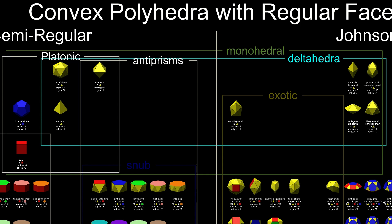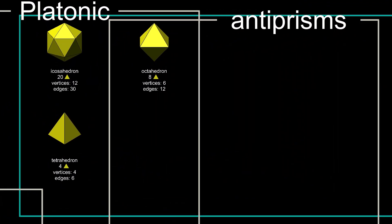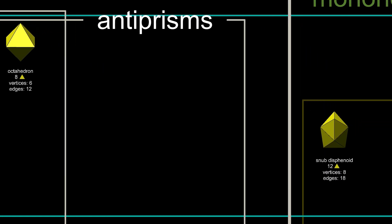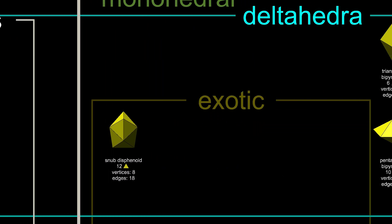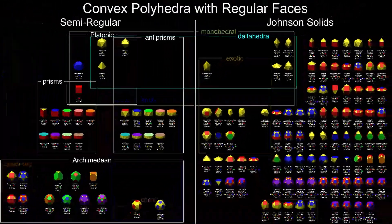But there are eight made only from triangles. These are called deltahedra. In addition to three platonic deltahedra, there are five Johnson deltahedra, each with a different number of faces.